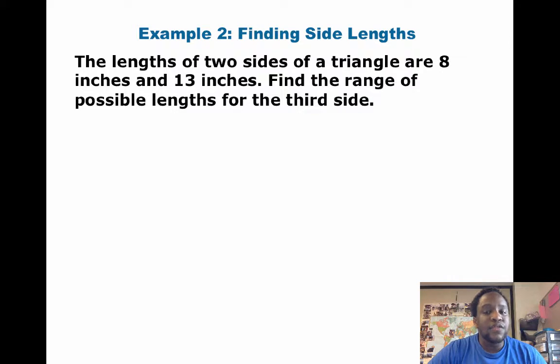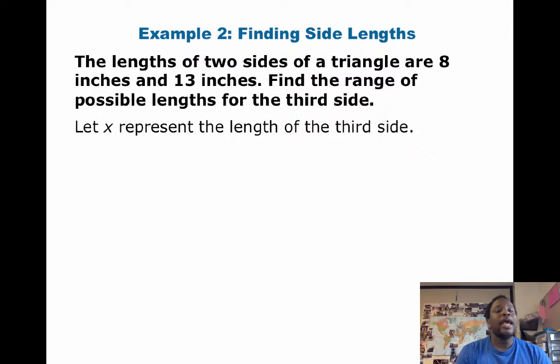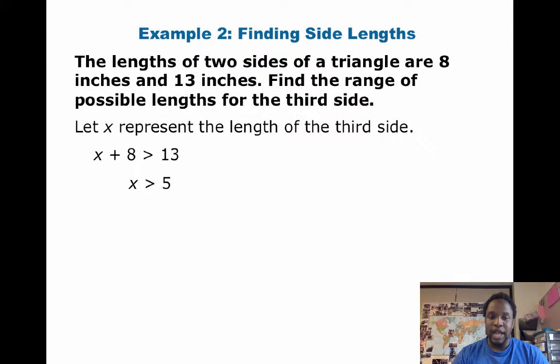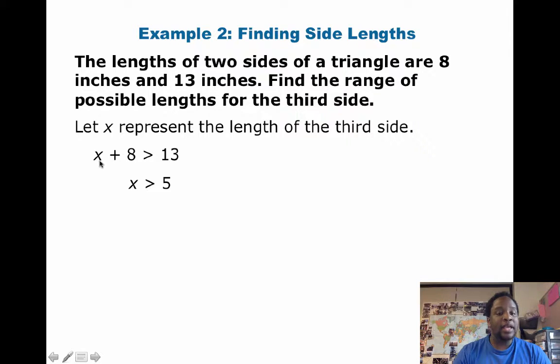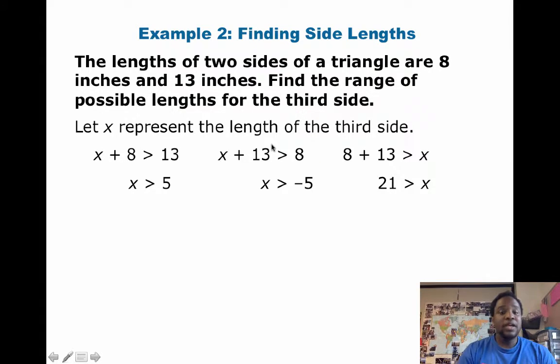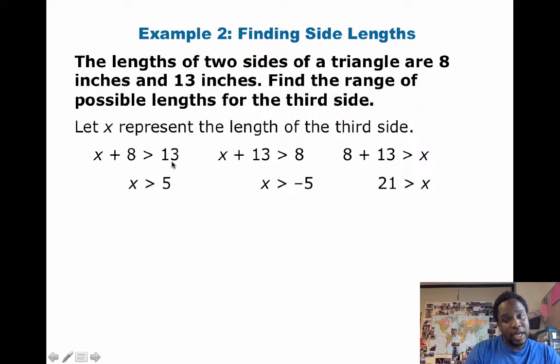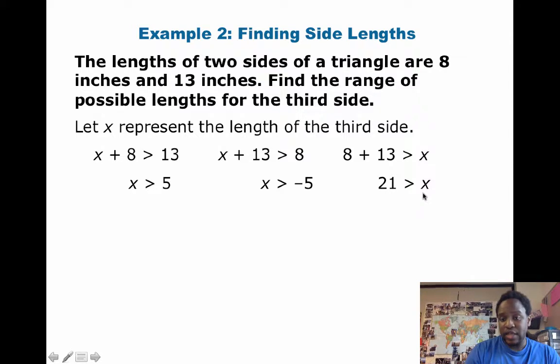So, here, the side lengths of two sides of a triangle are 8 inches and 13 inches. Find the range of possible lengths for the third side. So, 13 inches might be the second shortest side, but it might also be the longest side. So, what we'll do here is that let x represent the length of the third side. So, we would say that, one, x plus 8 is greater than 13, because that's 13 being the longest side. And then, also, x plus 13 is greater than 8. And we don't really need the middle one. So, we have x plus 8 is greater than 13 and x plus 13 is greater than 8.